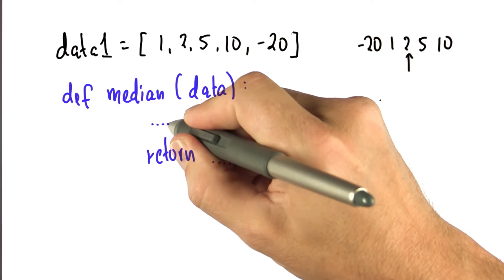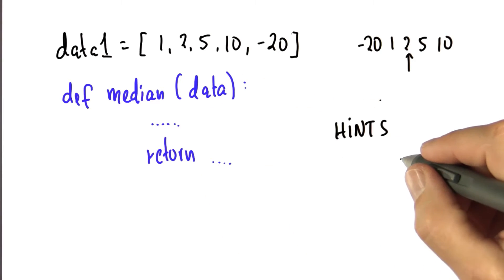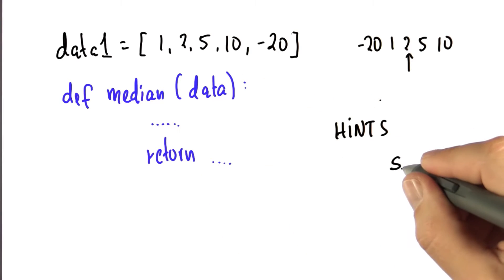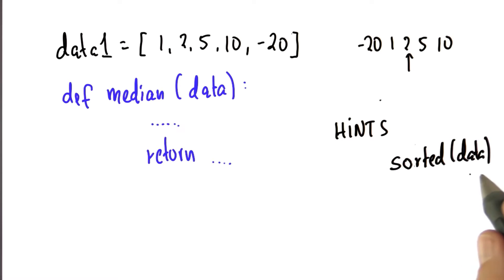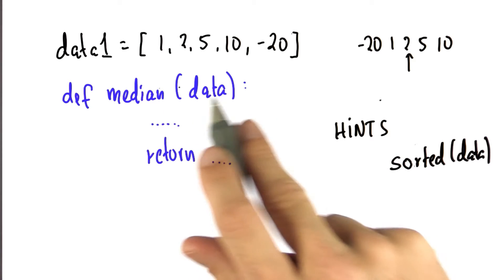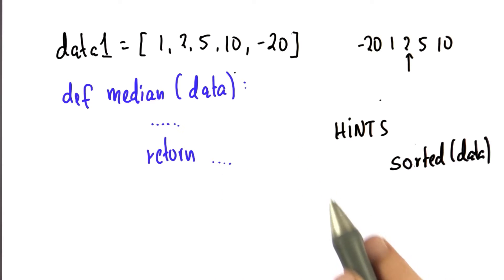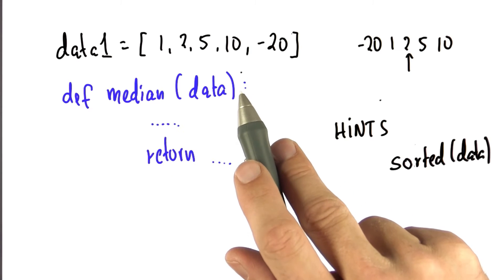So this one is more complicated to program, and there's two hints. First, there's a function called sorted, and you can give it data, and the output of the function gives you a sorted list that's built into Python so you don't have to worry about how to sort things. Luckily not.